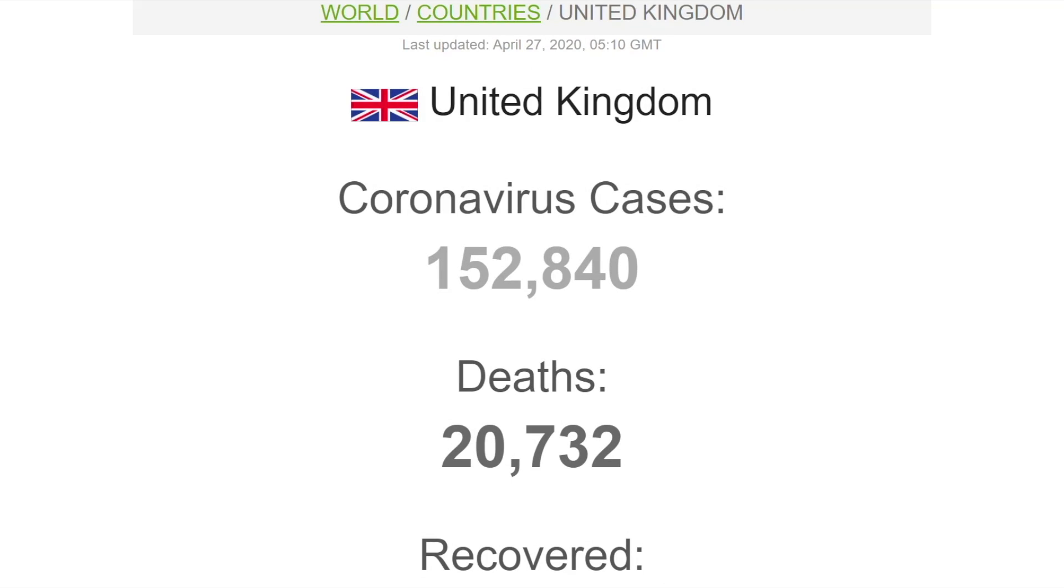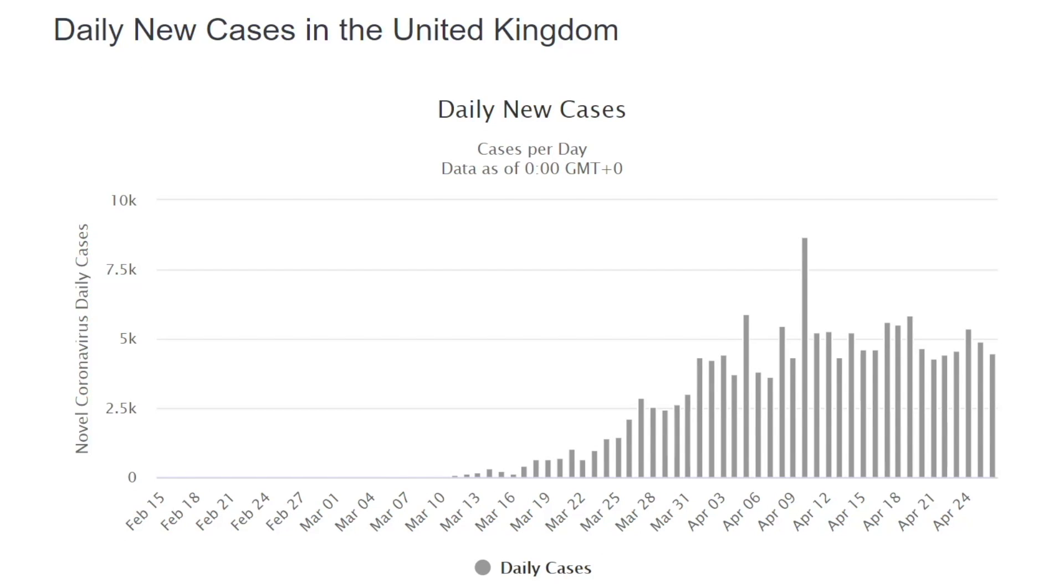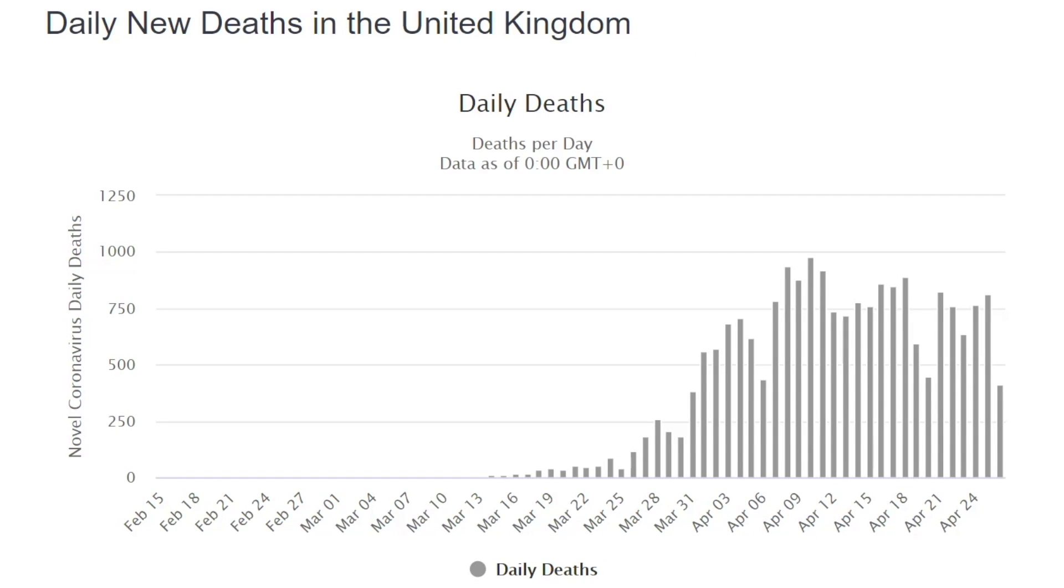In the United Kingdom, 150,000 coronavirus cases. Daily new cases over there seem to have plateaued as well. Again, still too early to tell whether or not the number of daily deaths are coming down.